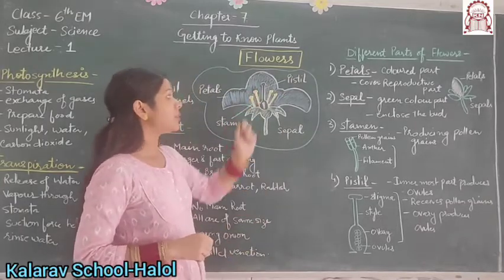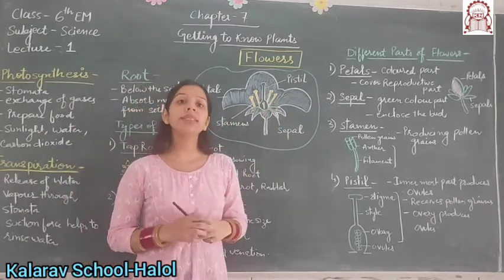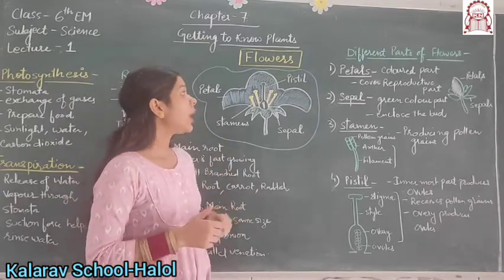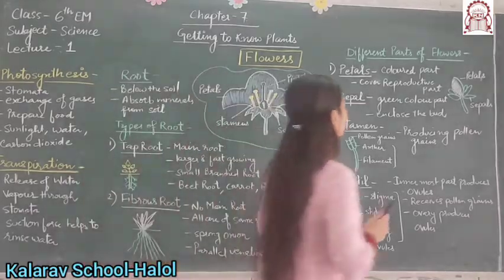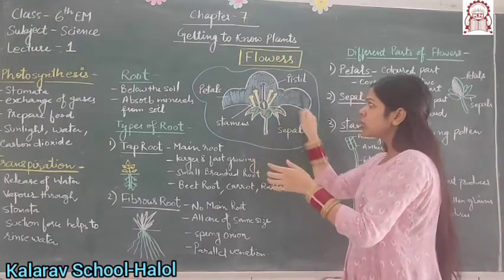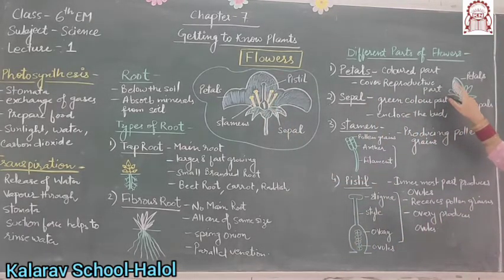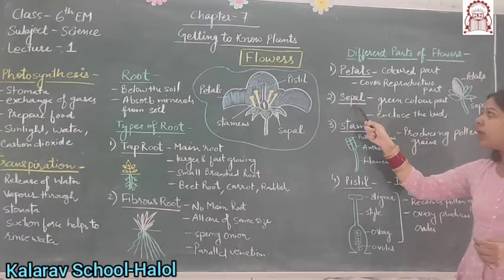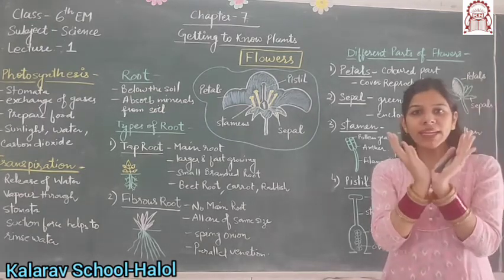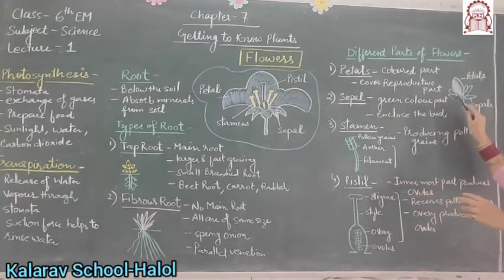The next part of the plant is flowers. A flower has different parts like petals, stamen, and sepal or pistil. Flower is the main reproductive part of the plant. Number one is petal. Petal is the colored part, and it mainly covers the reproductive parts. Number two is sepal. Sepal is the green colored part which encloses the bud. Before the flower opens, it is called a bud. When it opens up, the different parts are called petals. This green part is called sepal.